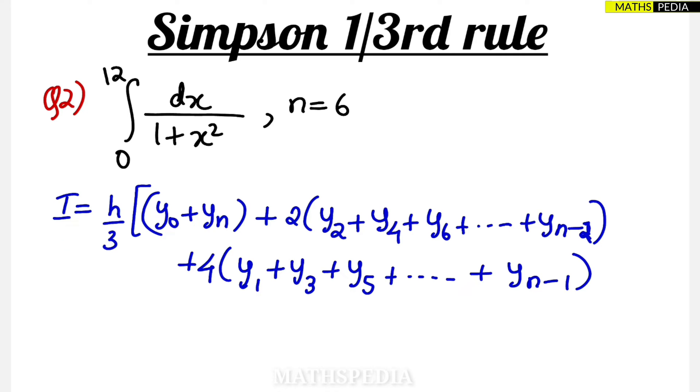We are given with the formula here. We have already discussed in the first problem itself. So y0, yn, h by 3 is there. One-third remember, one-third means h by 3. And two times of what, the two's multiple.